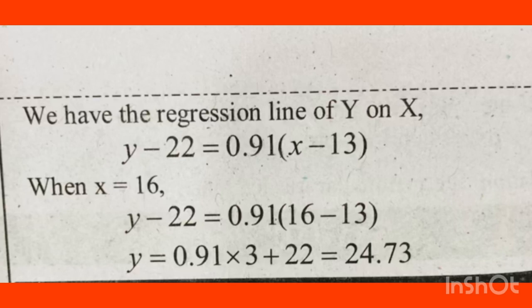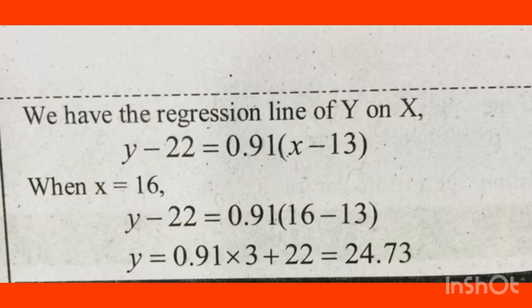ȳ is equal to 22. So y minus 22 is equal to 0.91 into x minus x̄. When x is equal to 16: y minus 22 is equal to 0.91 into 16 minus 13, which is 0.91 into 3. Therefore y is equal to 0.91 into 3 plus 22, which equals 24.73.